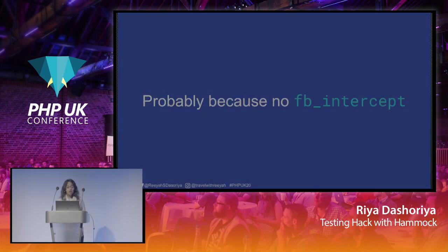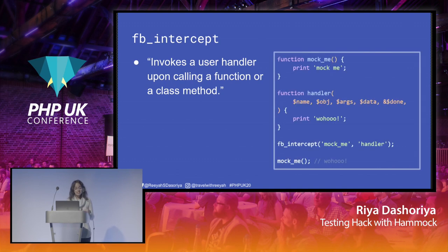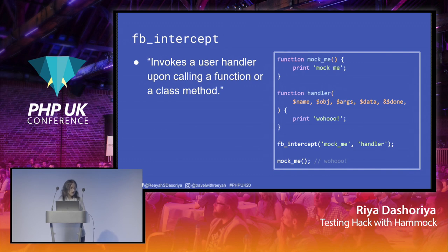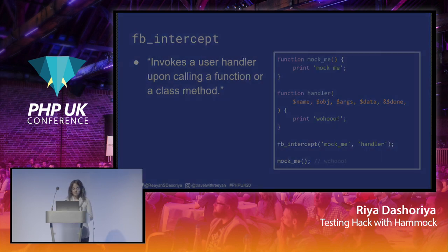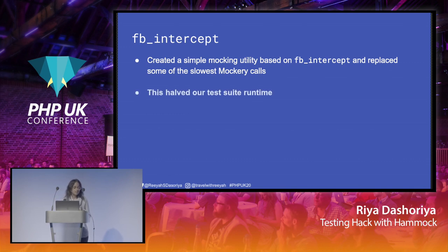When Mockery was developed, there was no concept of FB Intercept. FB Intercept basically intercepts a function call and invokes a user handler in place of that function. In this example, there is a function called 'mock_me' which prints 'mock me', and a handler function that takes arguments and prints 'woohoo'. When you intercept 'mock_me' and call a handler function using FB Intercept, calling the mocked function will invoke the handler instead. So when you intercept 'mock_me' and then call it, it will print 'woohoo' instead of 'mock me'. We used the FB Intercept functionality to create a simple mocking utility, replacing our slowest Mockery calls.